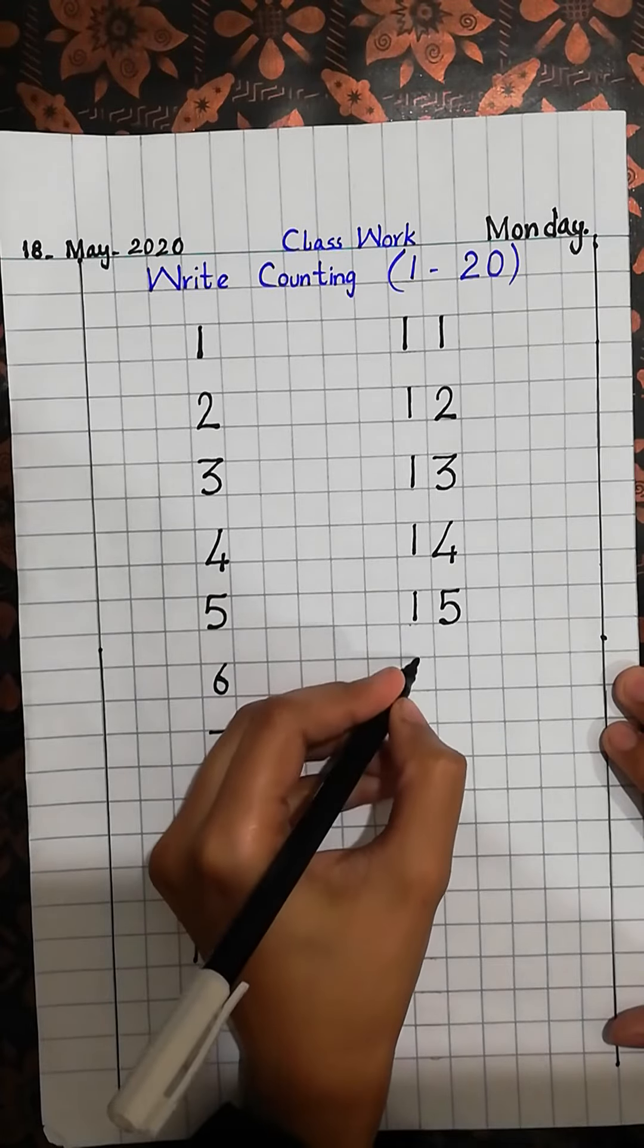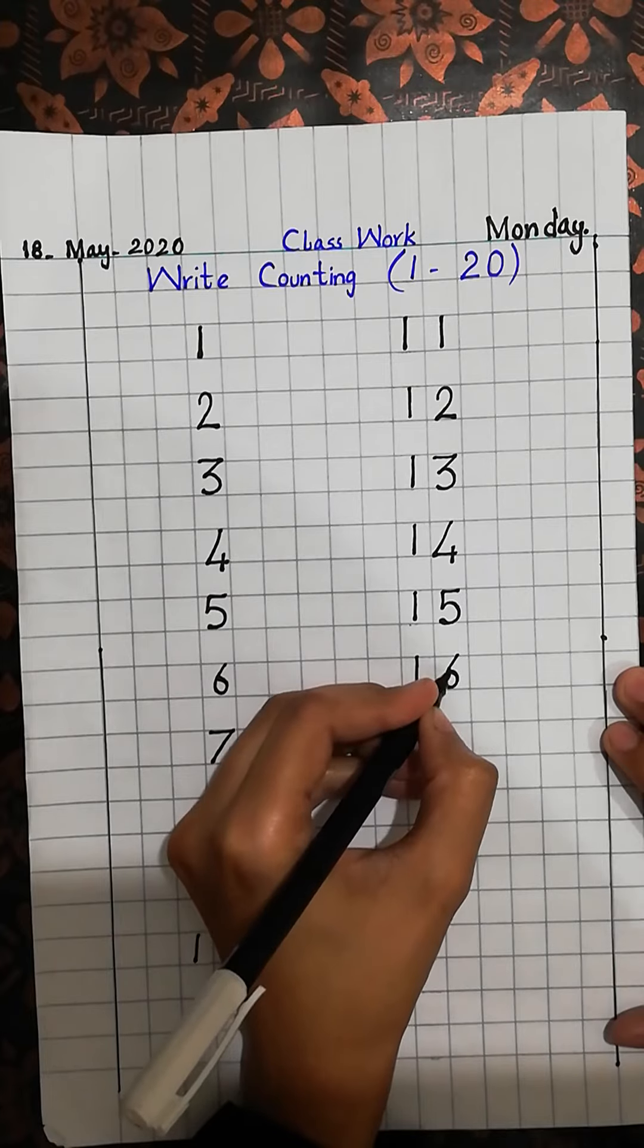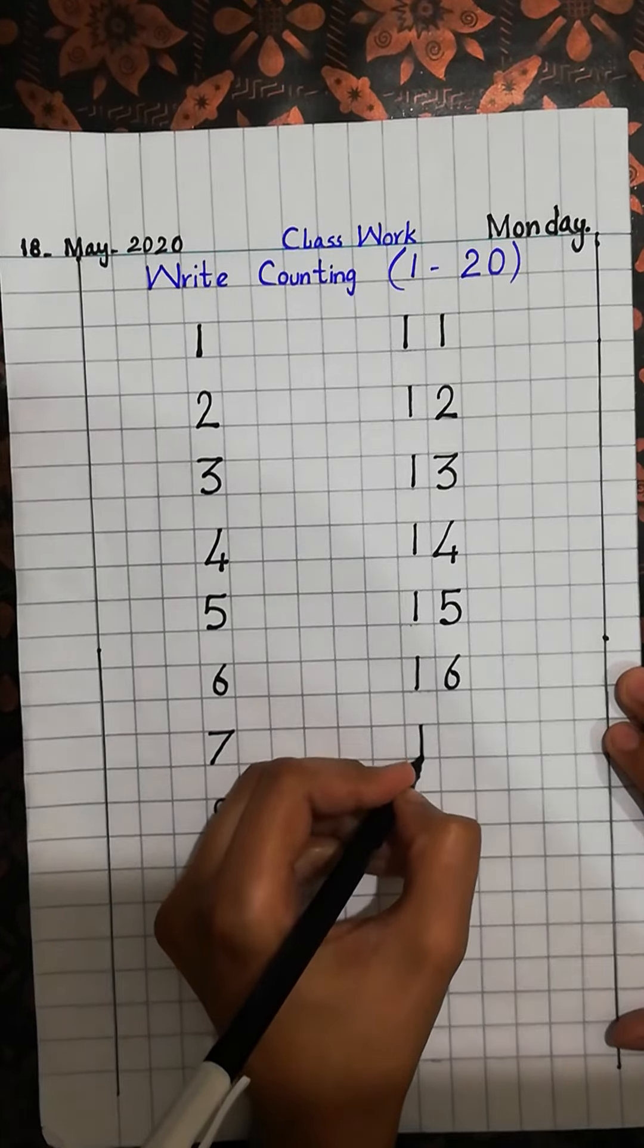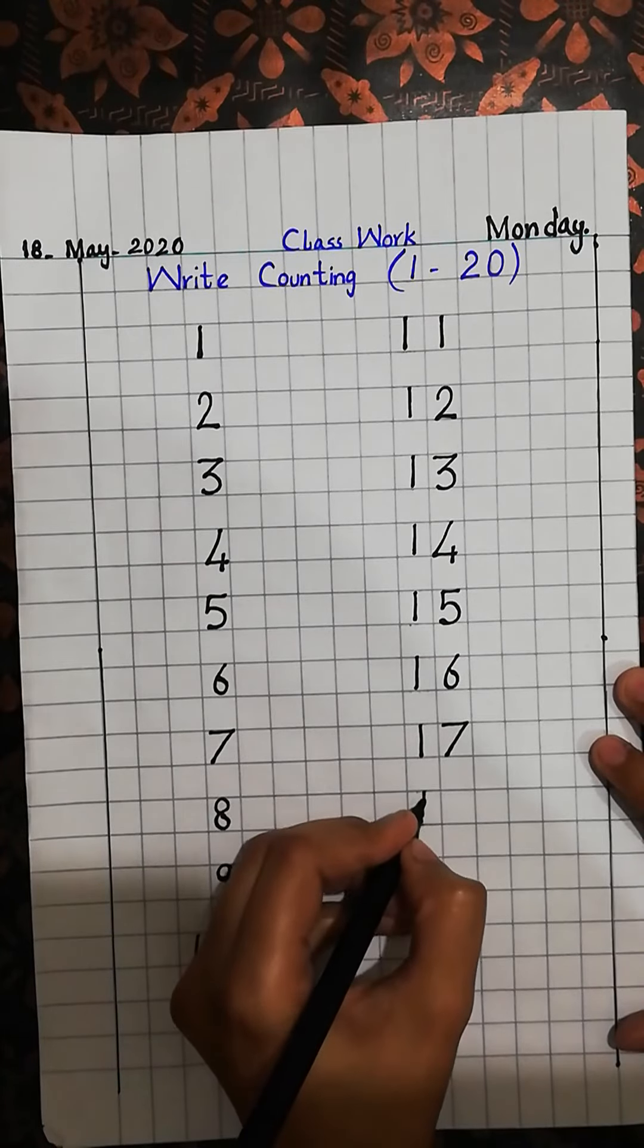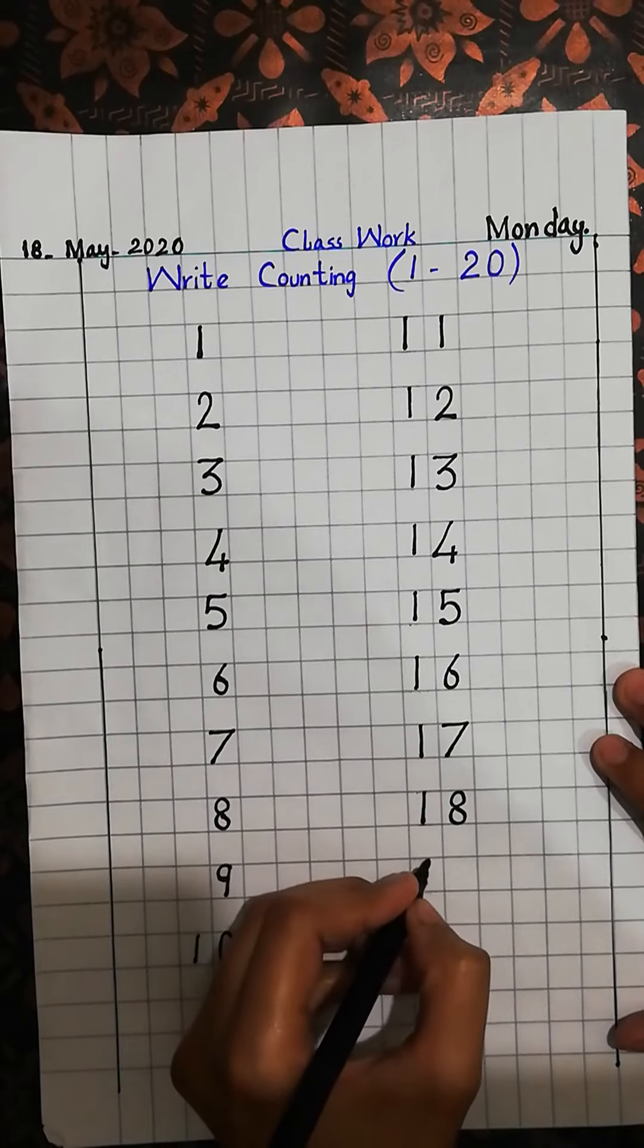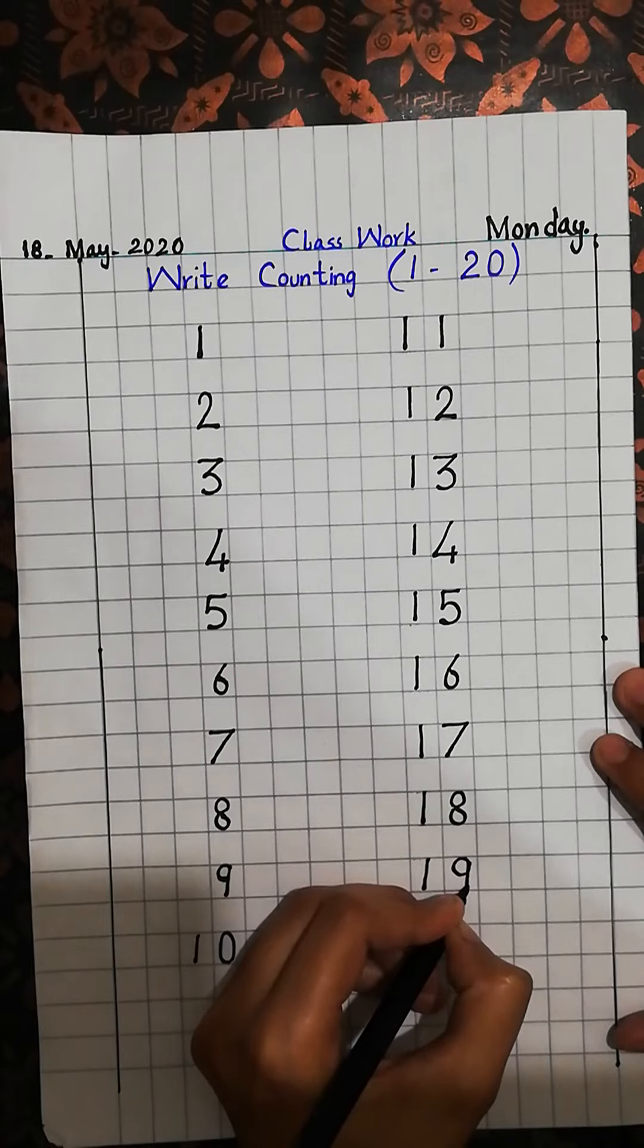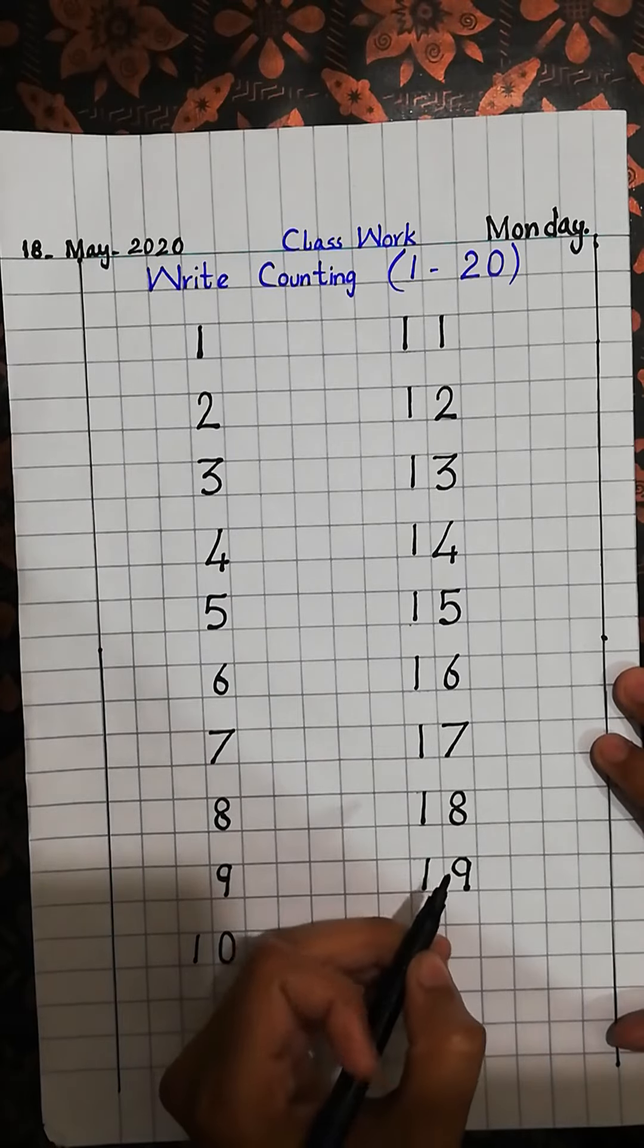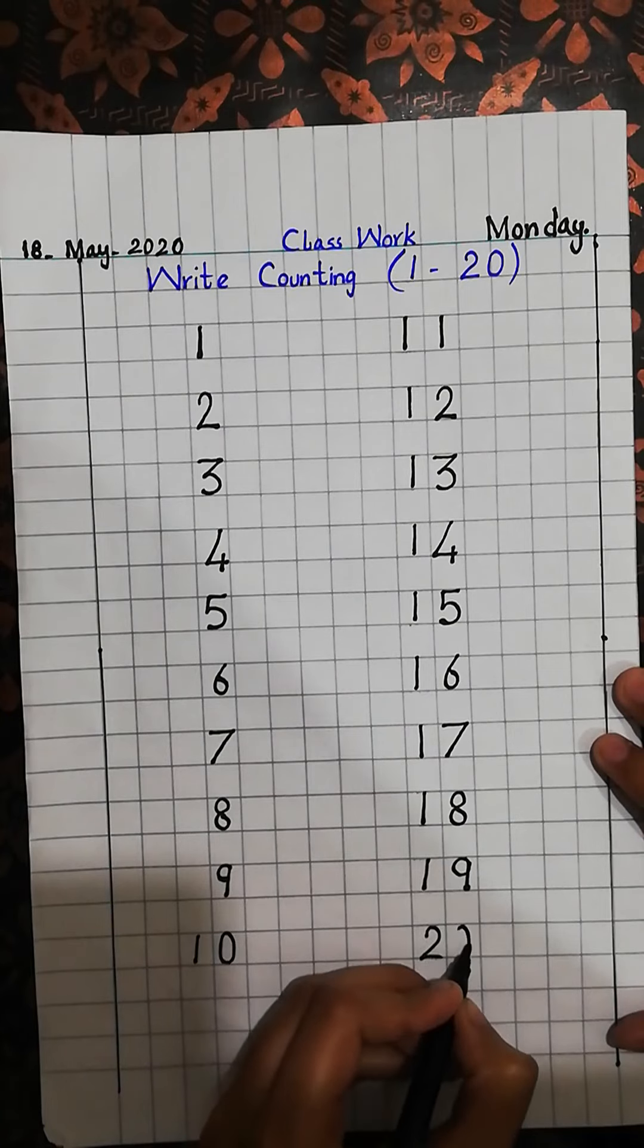What will be the next number? 1, 6. 16. 1, 7. 17. 1, 8. 18. 1, 9. 19. And what will be the next number? 2, 0. 20.